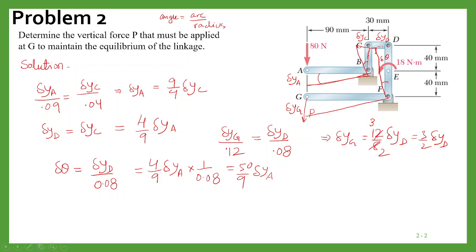Now we need to write the virtual work, so delta U, it will be equal to, now this, 80 into delta y_a, because they are in the same direction. Similarly, suppose we are assuming P as downward, then P into delta y_g.